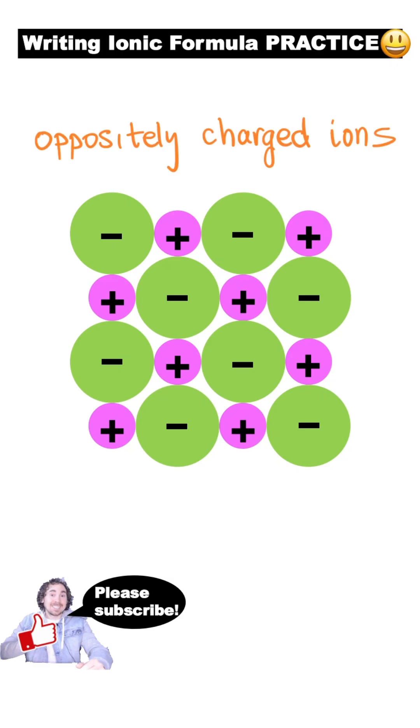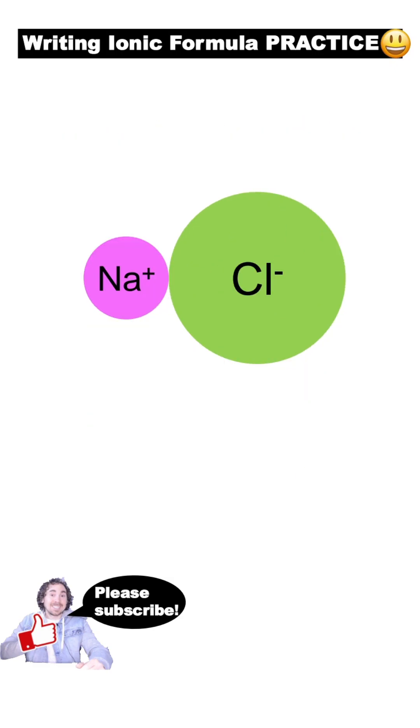Ionic compounds are composed of oppositely charged ions. Ionic compounds form when the positive and negative charges balance each other out.